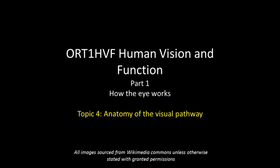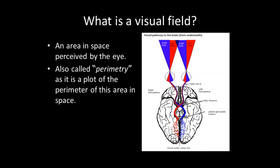Let's start with understanding what a visual field is. A visual field is an area in space perceived by the eye. How sensitive the eye is in detecting a stimulus will vary throughout the visual field, and in a healthy eye it depends on the number and the function of the ganglion cell receptive fields at any given point.